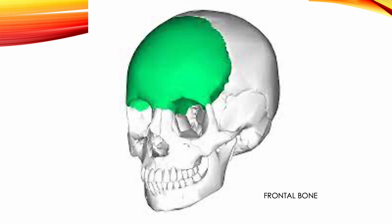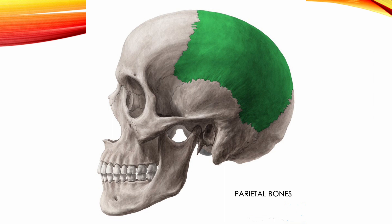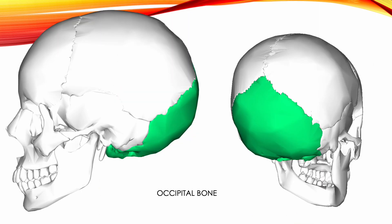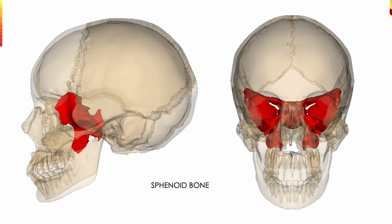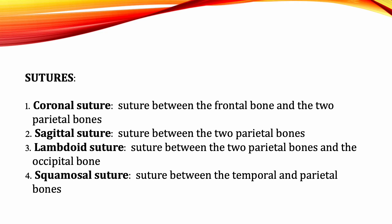The frontal bone is anterior to the calvaria; it is unpaired. The parietal bones are posterior to the frontal bone, paired. The occipital bone is posterior to the parietal bones, unpaired. Temporal bones are on the sides of the skull, paired. The sphenoid bone is anterior to the temporal bones and base of the occipital bone, traversing from the left to right sides of the skull, unpaired. The sutures of the skull include coronal suture, sagittal suture, lambdoid suture, and squamosal suture.